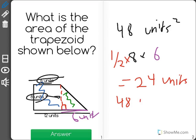48 plus 24, the two parts together, make up 72 units squared.